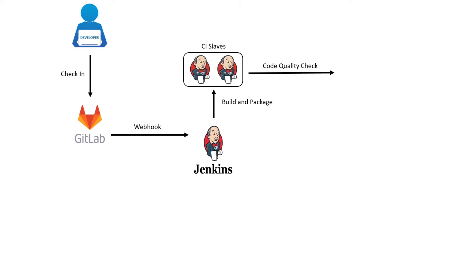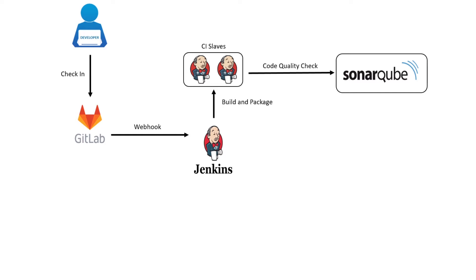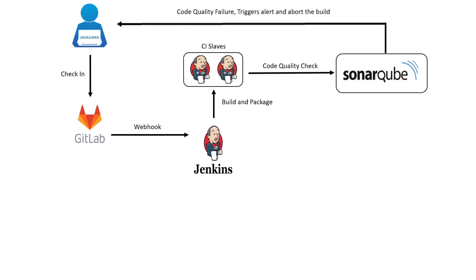In the next stage, Jenkins uses the SonarQube scanner plugin for continuous inspection of code quality, to perform automatic reviews with static analysis of code to detect bugs, code smells, and security vulnerabilities. SonarQube offers reports on duplicated code, coding standards, unit tests, code coverage, code complexity, comments, bugs, and security vulnerabilities. When the code doesn't meet the quality standards, an alert mail will be triggered to the development team and the pipeline will be aborted.